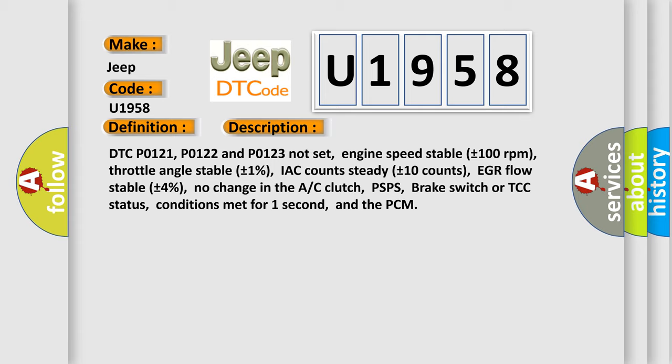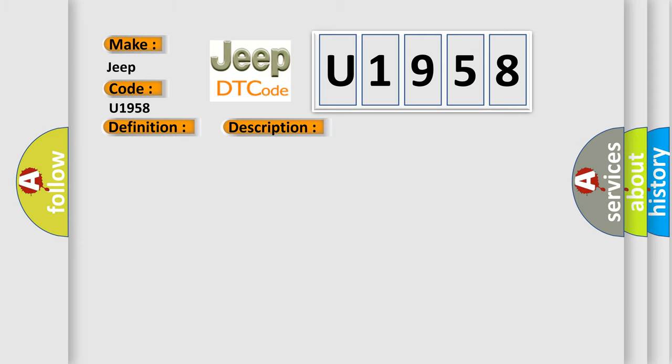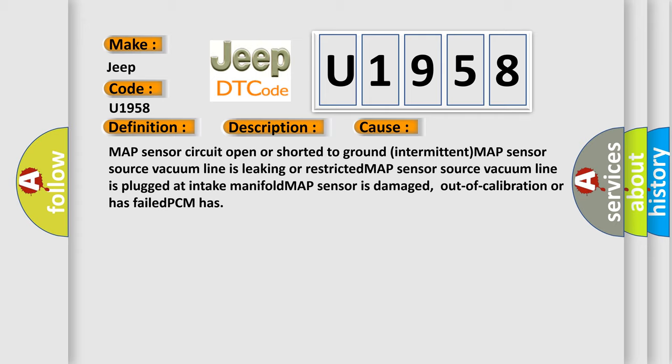Here is a short description of this DTC code. DTC P0121, P0122, and P0123 not set; engine speed stable plus or minus 100 RPM; throttle angle stable plus or minus 1%; IAC count steady plus or minus 10 counts; EGR flow stable plus or minus 4%; no change in AC clutch, PSPS, brake switch, or TCC status; conditions met for 1 second and the PCM. Common causes include: MAP Sensor Circuit Open or Shorted to Ground, Intermittent MAP Sensor, Source Vacuum Line Leaking or Restricted, Vacuum Line Plugged at Intake Manifold, or MAP Sensor Damaged, Out of Calibration, or Failed.